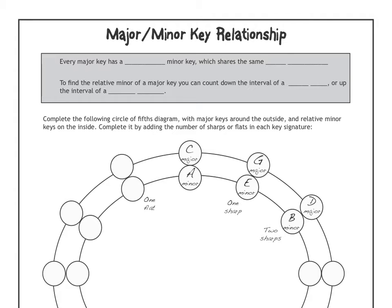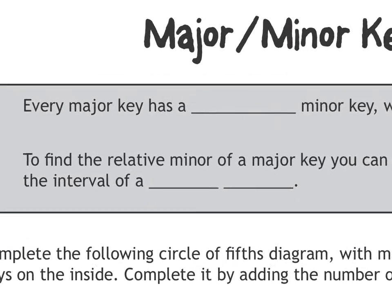Alright, we're going to look at the relationships between a major key and its relative minor key. This is a one-page lesson, and then the next four pages are just working in different key signatures and seeing the connections between the relative minor keys. So, in the grey box at the top, we're going to fill in the blanks.